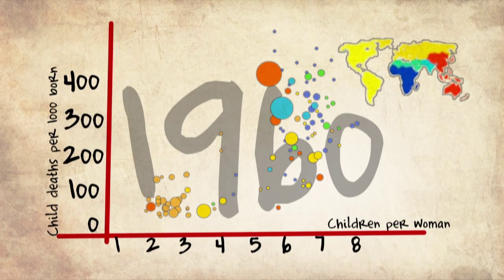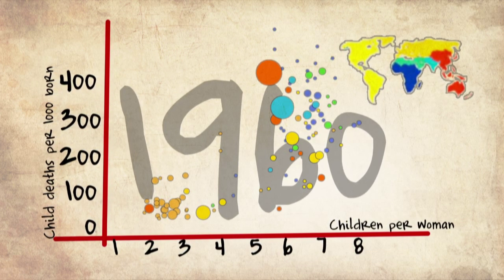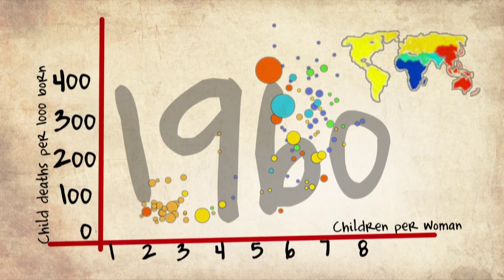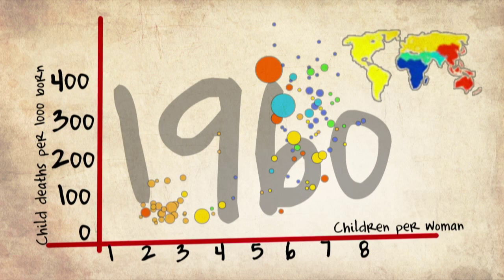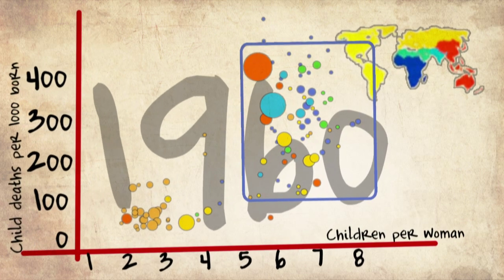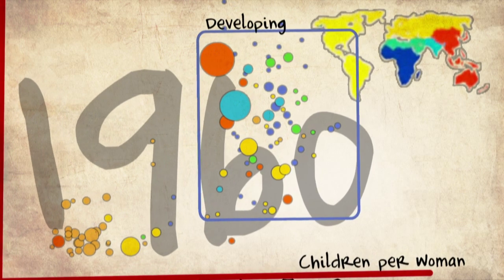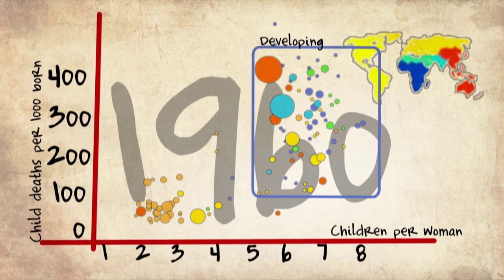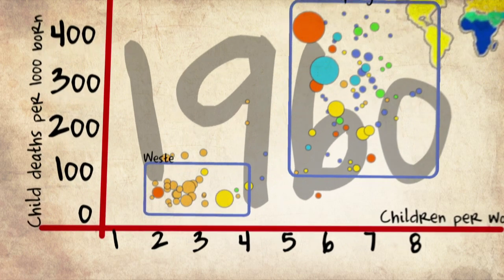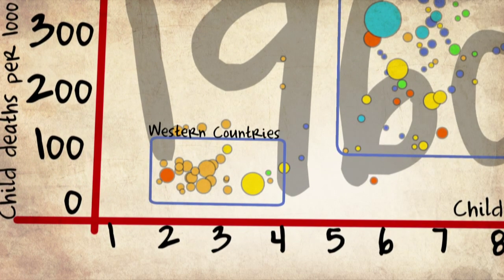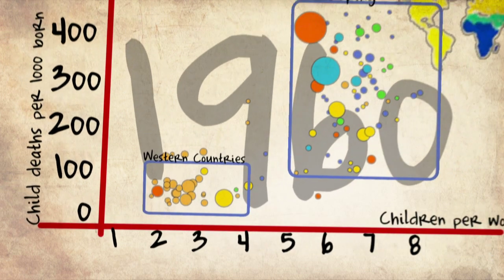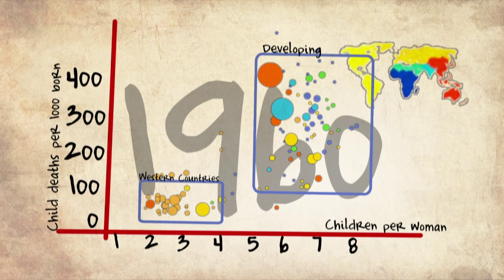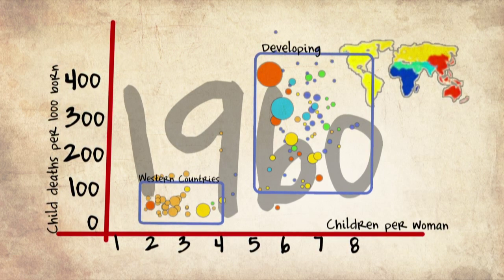Let me now bring you to a wider picture of child mortality — specifically the relation between child mortality and family size. This is 1960, 50 years ago. Each bubble is a country and the size of the bubble is the population. The developing countries had high or very high child mortality and family sizes of 6 to 8, while the Western countries had low child mortality and small families.